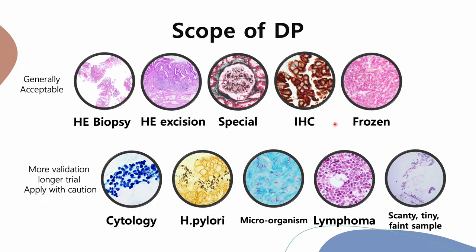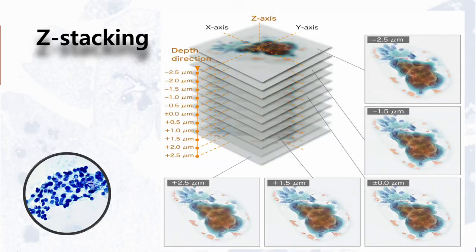Recently, as general display quality is getting better — Full HD, QHD, and 4K UHD — the image quality and computing power of a reasonable PC workstation is generally acceptable for most specimens and stains to apply digital pathology. However, we should pay more time and effort on validation and trial operation for samples like cytology, special stains for microorganism detection, and cases with the possibility of lymphoma.